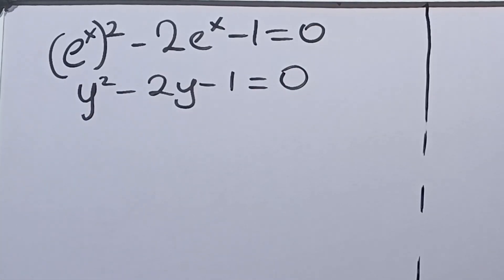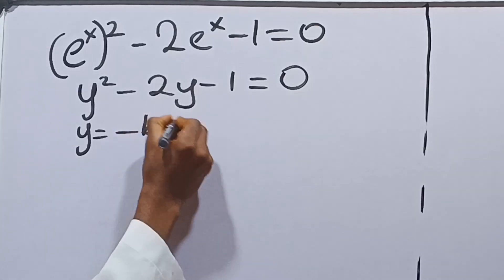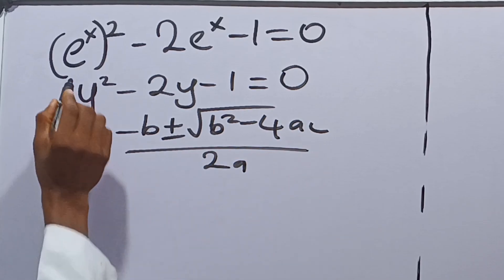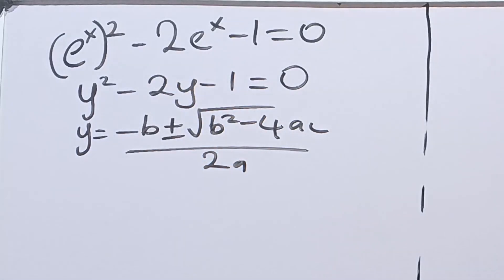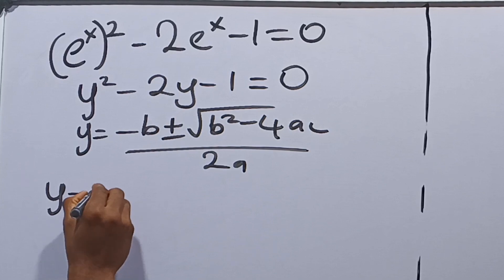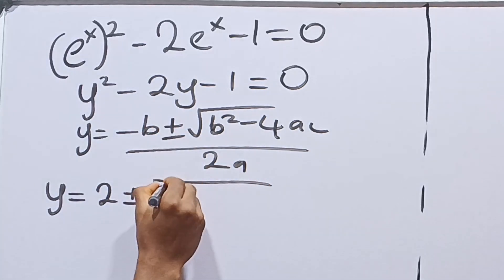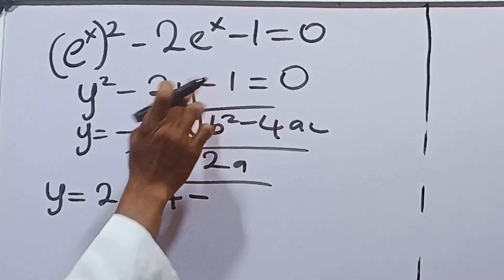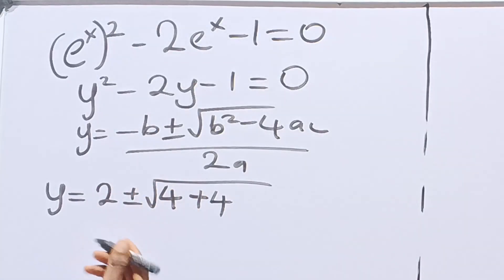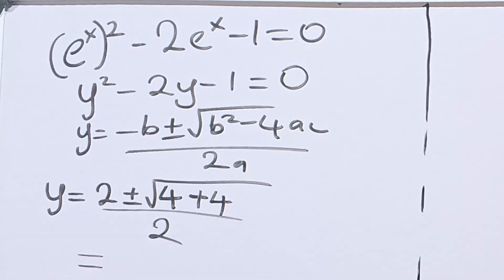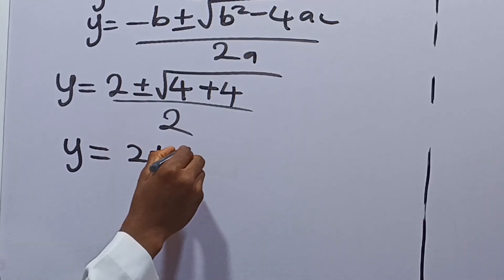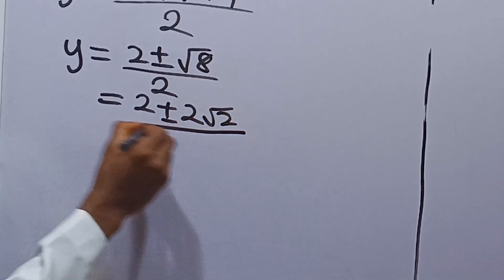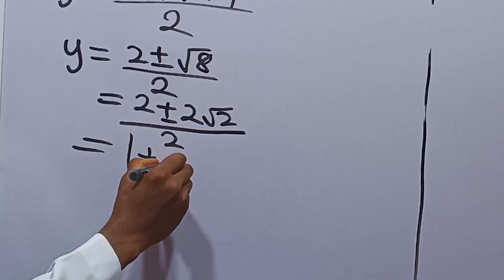From here, y equals minus b plus or minus square root of b squared minus 4ac, all over 2a. Here a is the coefficient of y squared, b is the coefficient of y, and c is the constant term. So y equals minus negative 2, which is 2, plus or minus square root of 4 minus 4 times negative 1, all over 2. This gives y equals 2 plus or minus square root of 8, divided by 2, which equals 1 plus or minus root 2.